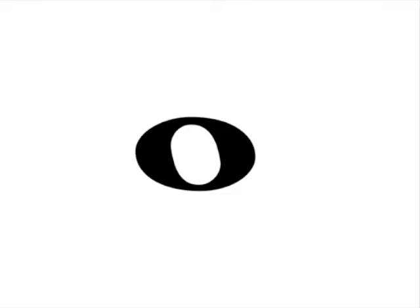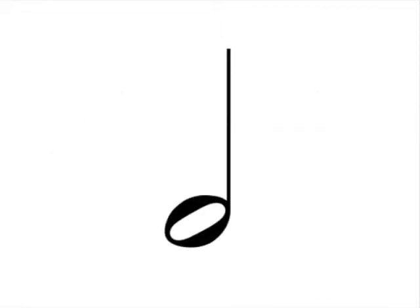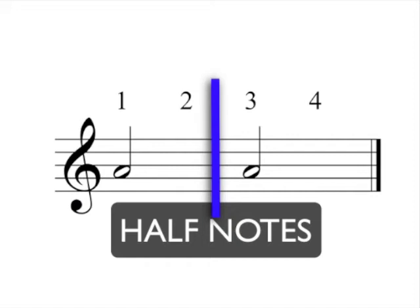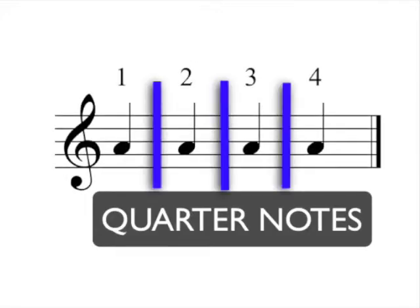Notes that are held by the player for four beats are appropriately called whole notes, since they last for the whole measure. Other notes are held by the player for two beats — since these only last for half the measure, they are called half notes. Still other notes are held for just one beat; since these shorter notes only take up one quarter of the measure, they are called quarter notes.